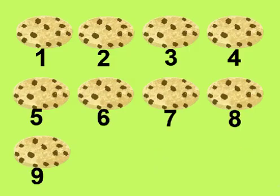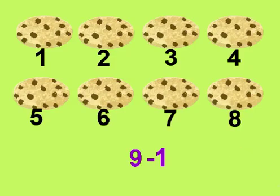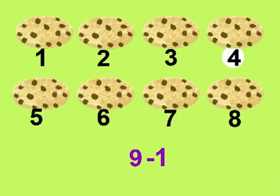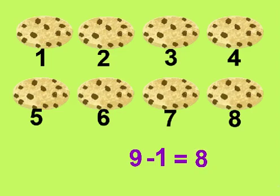If we have nine cookies left and we subtract one more, how many cookies do we have? One, two, three, four, five, six, seven, eight. We have eight cookies left. Excellent.